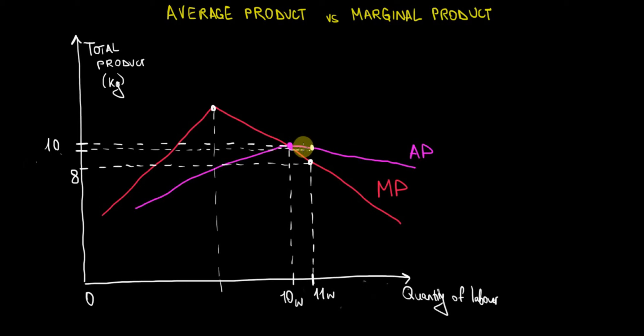Now I will prove it with a numerical example. Suppose that the level where the average product and the marginal product are equal to each other is the level of having 10 workers on the apple field. Ten workers have an average productivity and the marginal productivity of 10 kilograms produced, 10 kilograms of apple harvested per worker. So average product equals to marginal product equals to 10 kilograms harvested per worker.